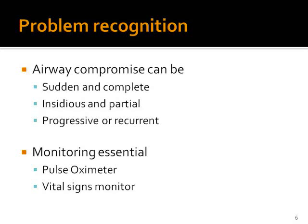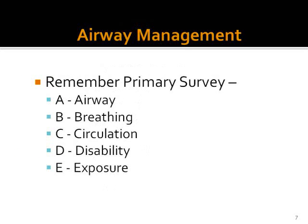The airway can be compromised either suddenly, insidiously, progressively, or recurrently. Monitoring is essential to guarantee airway protection, and we do this by pulse oximetry and vital signs. Hypoxemia will typically result in tachypnea and tachycardia. In airway management, the primary survey stands for A and B, which are the most important priorities in managing a trauma patient.